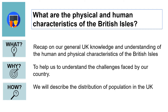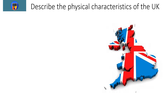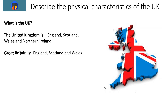Turn to page two of workbook A, to the page that says 'What are the physical and human characteristics of the British Isles?' We're going to recap our UK general knowledge of physical and human characteristics, which will help us understand the challenges faced by our country and describe the distribution of population in the UK. The United Kingdom is made of England, Scotland, Wales and Northern Ireland. Great Britain is made of England, Scotland and Wales.